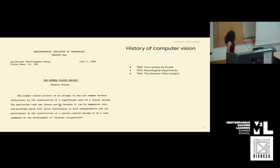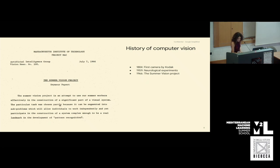Another work often considered as the birth of computer vision is the Summer Vision Project, done in 1966 at MIT. The first paragraph says: 'The summer vision project is an attempt to construct a significant part of a visual system.' That's quite an ambitious goal for a few months during summer. Of course, not the whole visual system was constructed, but due to setting this ambition, it's considered the beginning of computer vision as a scientific field.